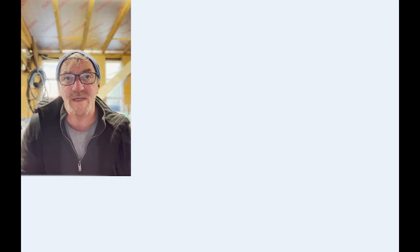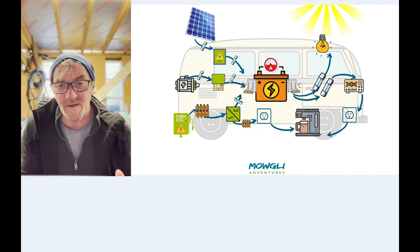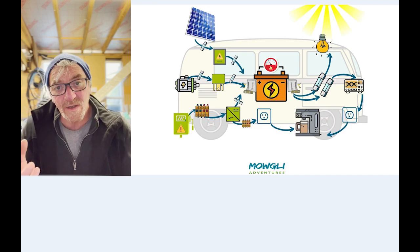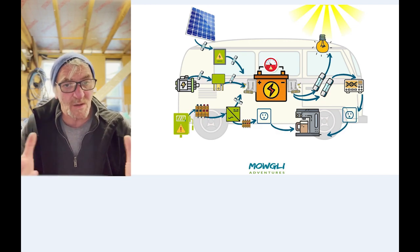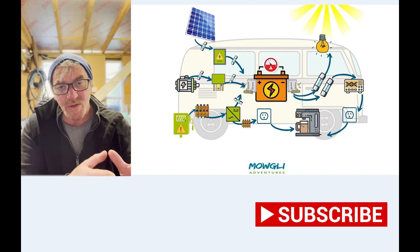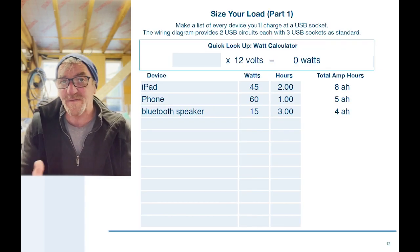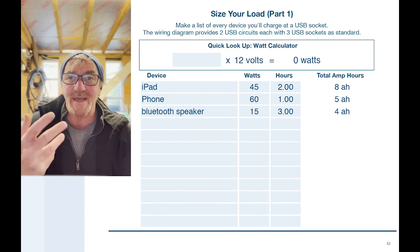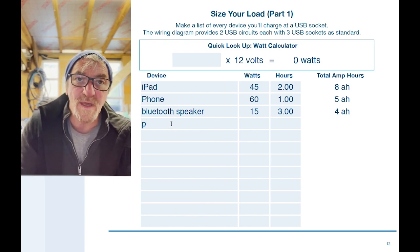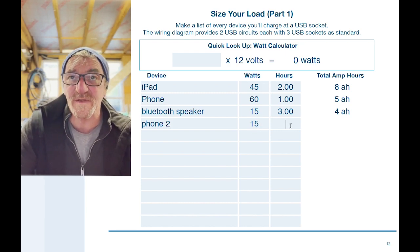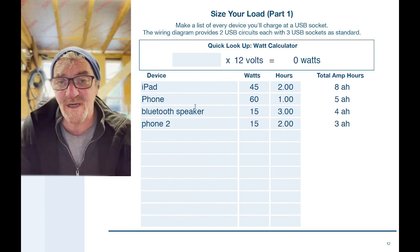We can go into the next stage which is about setting out our load. If you've read the handbook and understand the philosophy of Mowgli Adventures, we're all about understanding how much energy we're going to use on a daily basis versus how much energy we can capture on that day to replace the amount of energy we use. A lot of people talk about big batteries, but actually it's all about how much you use on the day and how much can you get back. First thing we start to do is list all our USB devices. I've got an iPad, I've got a phone, I've got a Bluetooth speaker, and I'll charge them up every day, and so I record them on this table here. If I wanted to add another phone, so I had an iPhone 2, all I would do is fill in the watts, 15 watts, and I'm going to charge it for two hours a day and that's going to tell me three amp hours a day.